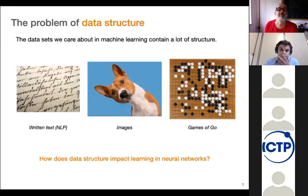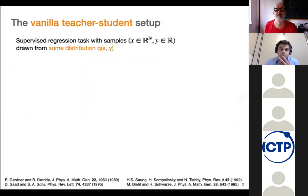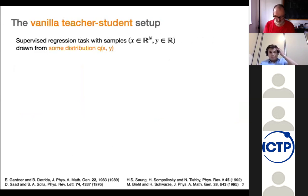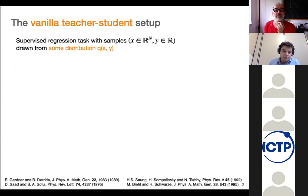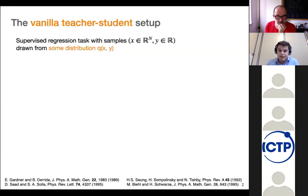For concreteness in this talk, I'm going to focus on a supervised regression setup. You have samples with high-dimensional features X and some label Y. Usually the assumption is that you draw a data set IID from some unknown data distribution. And if you're working in statistics or computer science, your goal will be to derive some theorem while making the least possible amount of assumptions about the data distribution — you want to make the most general statement, regardless of what your data is.